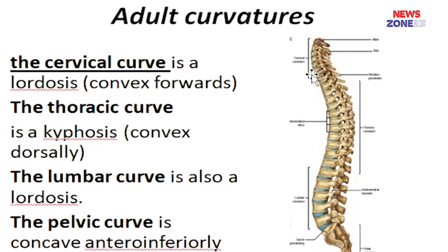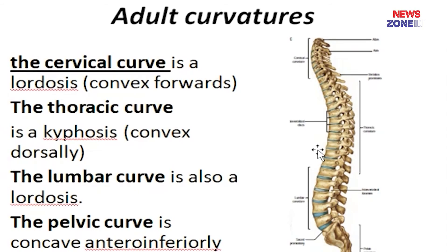In the adult, there are four curvatures present. In the cervical region, there is lordosis — that is convexity forward — extending from the atlas to the second thoracic vertebra, with the apex at the third, fourth, and fifth cervical vertebrae. The thoracic curvature extends from the third to the 11th–12th thoracic vertebra, with the apex at the 6th–9th thoracic vertebra — this is kyphosis, that is convexity backwards. The lumbar curvature is another lordosis — convexity forwards — with the apex at the third lumbar vertebra. Finally, the pelvic curvature has concavity anterior-inferiorly, formed from the lumbosacral angle to the apex of the coccyx.